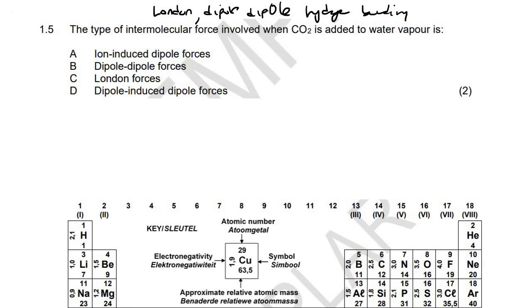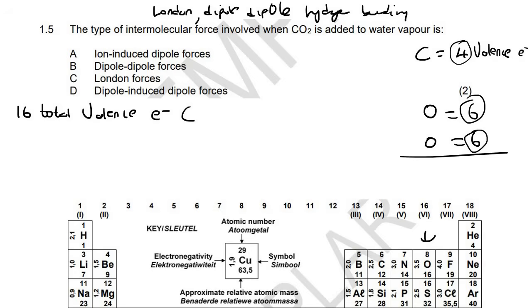The way I like to do Lewis diagrams is I go to the carbon and look at how many valence electrons. That's one, two, three, four - it's in group four, so it has four valence electrons. Oxygen is in group six, so oxygen has six, but there's two of them. If you add up all the electrons: four plus six is ten, ten plus six is sixteen. We have sixteen total valence electrons for carbon dioxide.